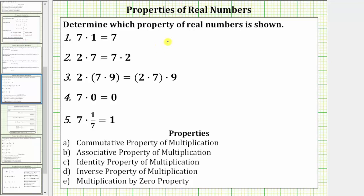We are asked to determine which property of real numbers is shown. We are given five properties of multiplication. Let's begin by reviewing these five properties.